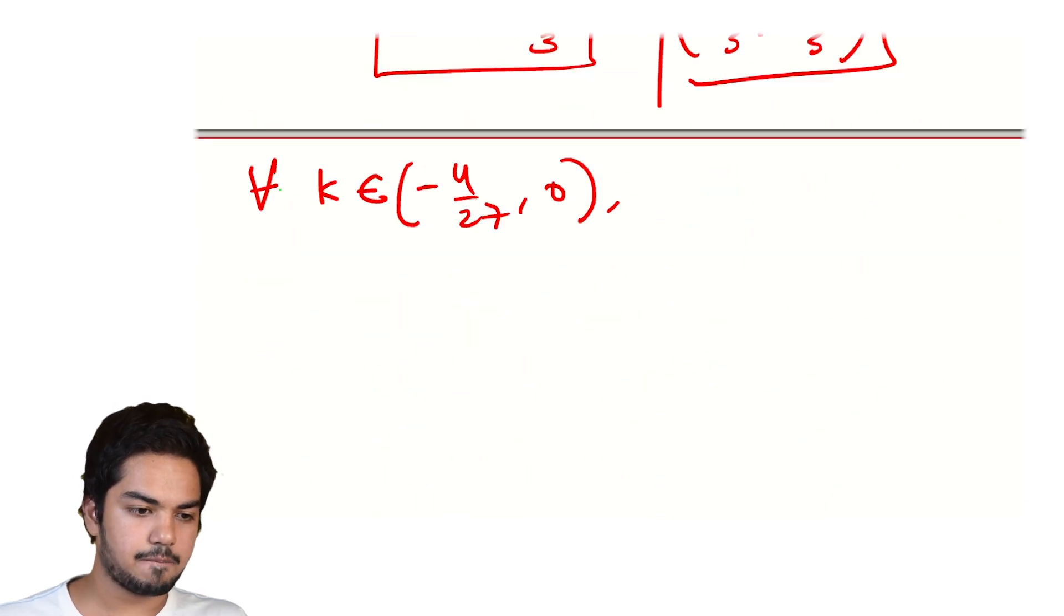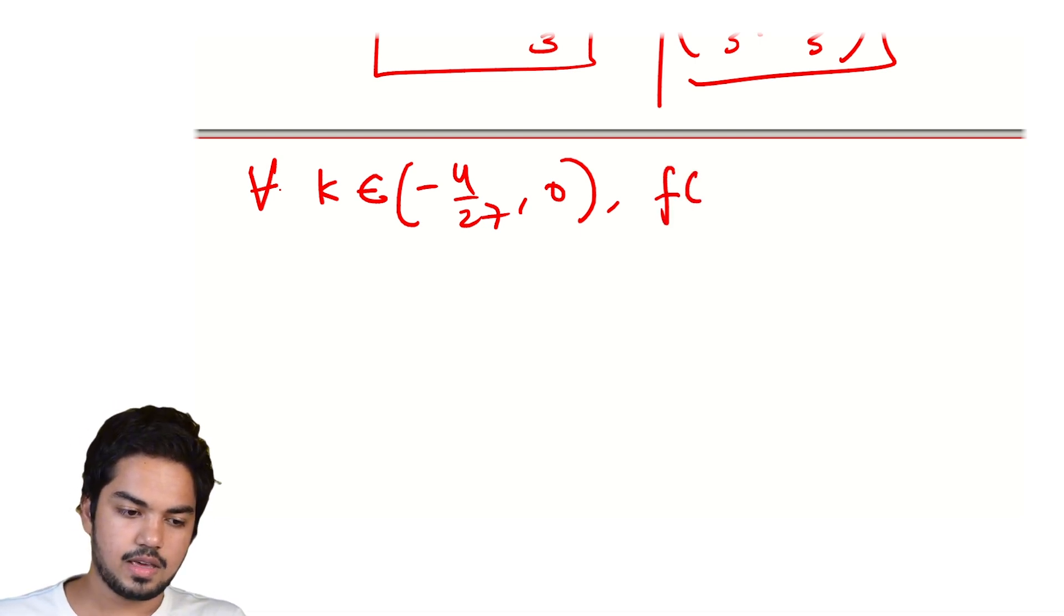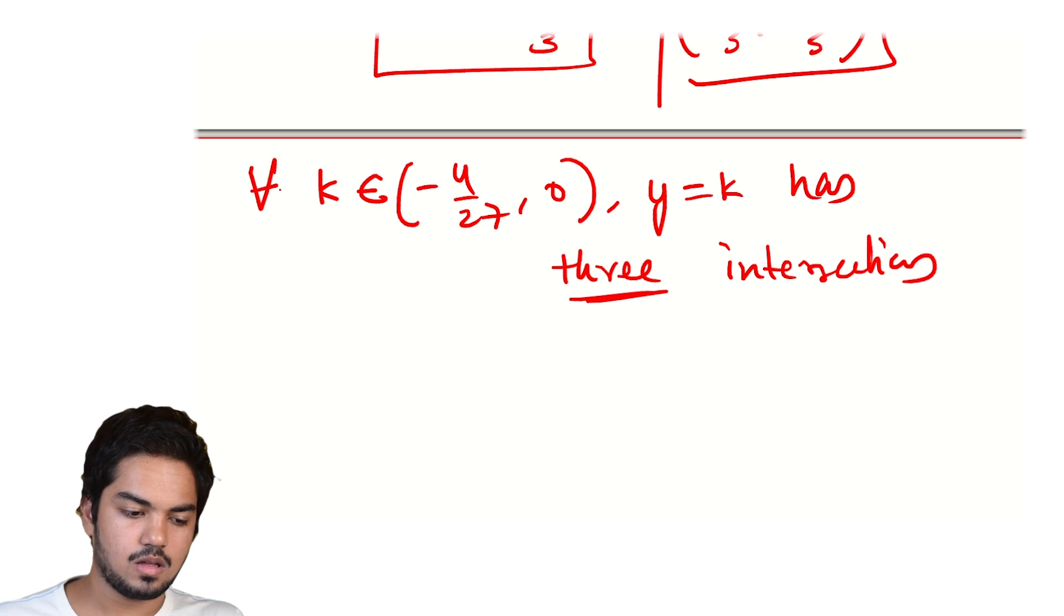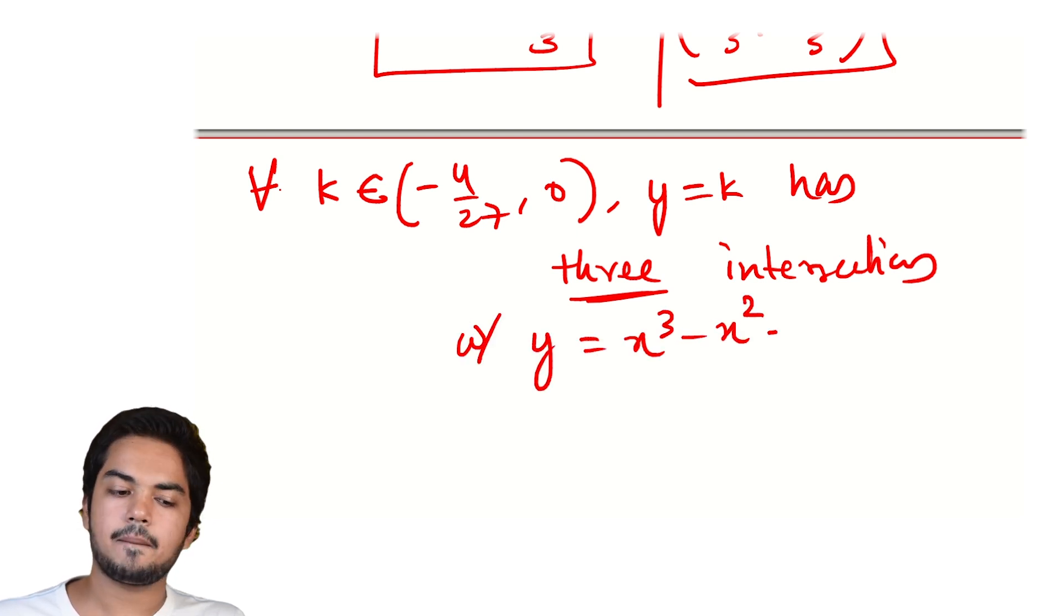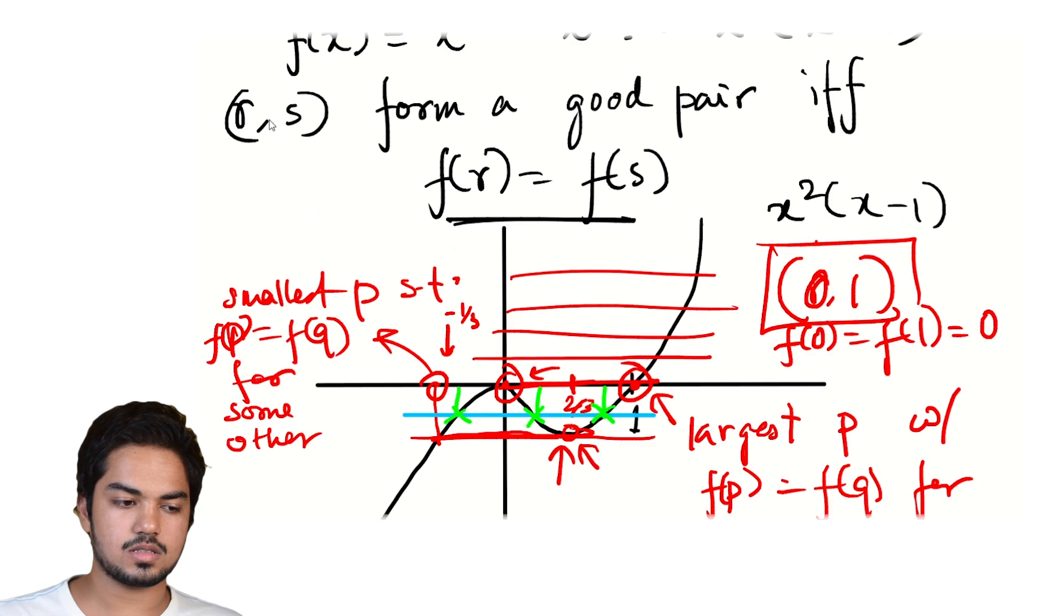And they correspond to three different values of X which have the same value of f(x). And these are all of our good pairs. For all K between -4/27 and 0, both excluded between these two values strictly, Y = K has three intersections with the graph of Y = x³ - x².